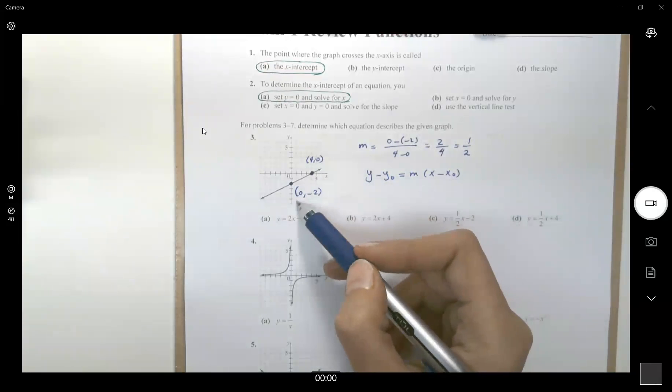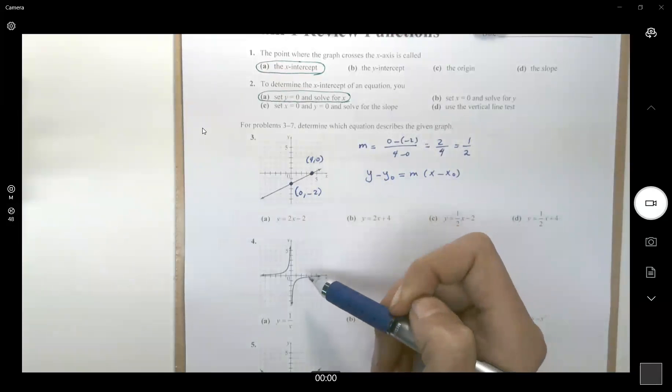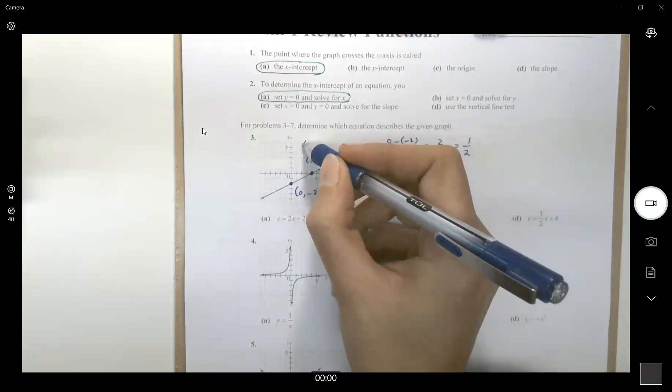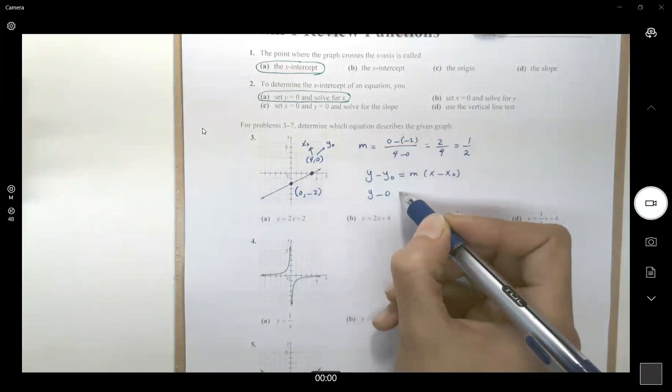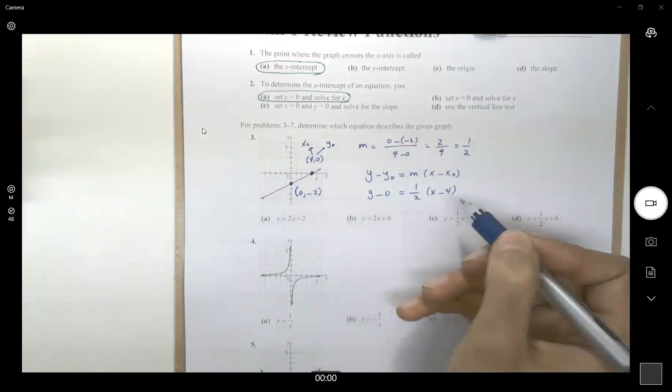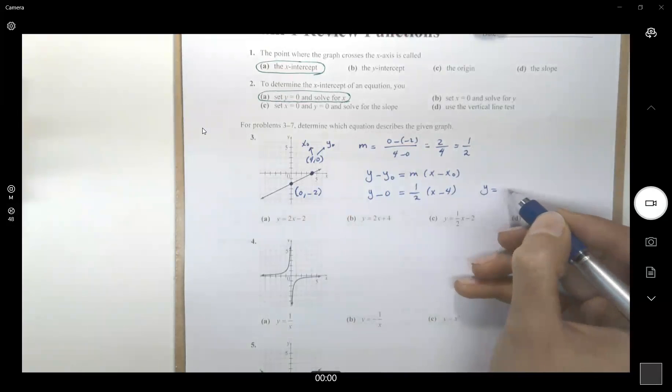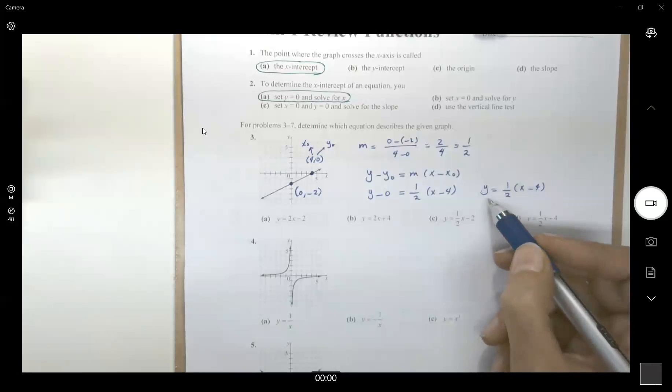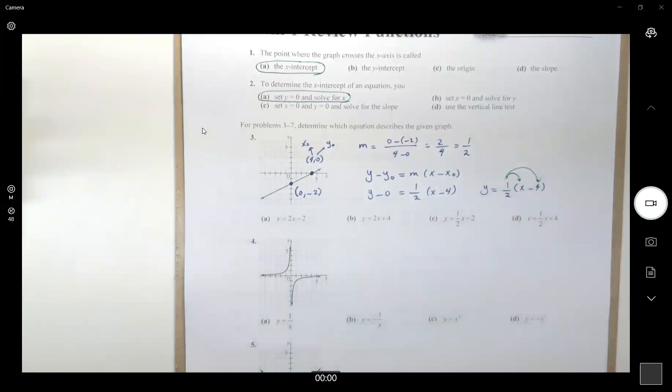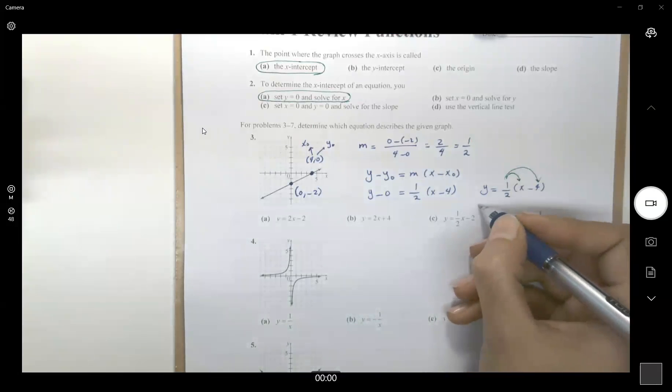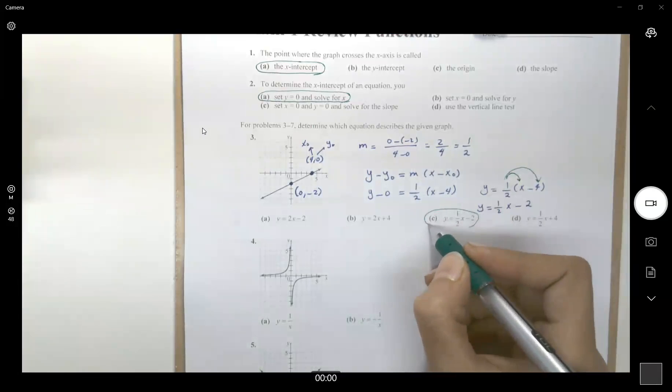You can take any of these two points to work with. So, let's take 4 as x sub 0 and 0 as y sub 0. We get y minus 0 equals to a half x minus 4. So, y becomes, if we distribute a half into parentheses, we get y equals to a half x minus a half times 4, which is 2. So, the correct answer is C.